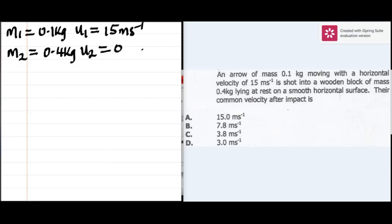During impact, the wooden block and the arrow will join together and move with a common velocity v. From the conservation of momentum in inelastic form, that should be presented as m1u1 plus m2u2 equals m1 plus m2 times v.